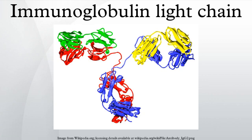Increased levels of free Ig light chains have also been detected in various inflammatory diseases. It is important to note that, in contrast to increased levels in lymphoma patients, these Ig light chains are polyclonal. Recent studies have shown that these Ig light chains can bind to mast cells and, using their ability to bind antigen, facilitate activation of these mast cells.